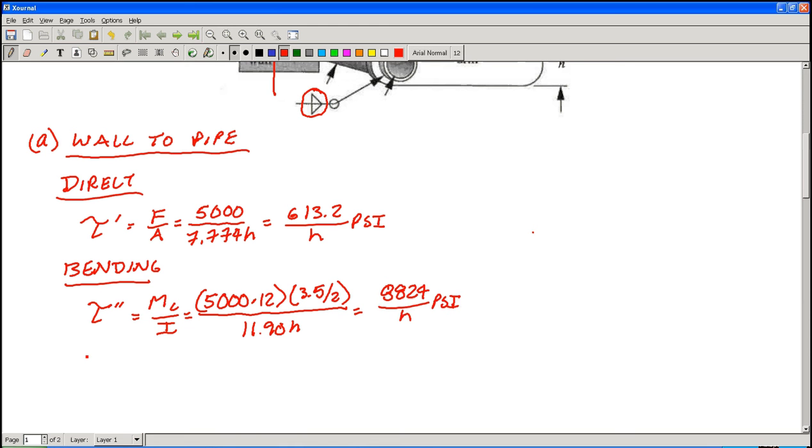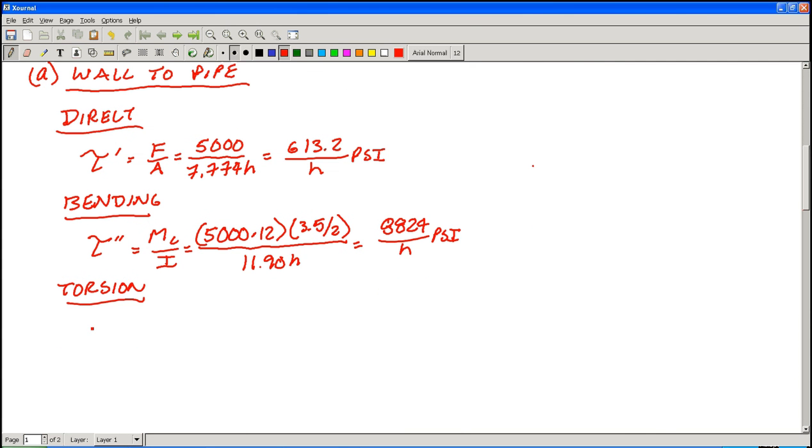We finally have torsion, which is called tau triple prime. T R over J. Torque is now 5,000 times distance A, so 7. And that gives 2572 divided by H, PSI.